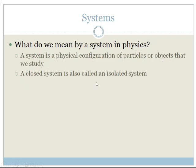A closed system is also called an isolated system. A system is a physical configuration, which means it's a group, a physical group of particles or objects. When I say a group, it could be layered in a lattice structure or arranged in a specific way. That's what they mean by a physical configuration.